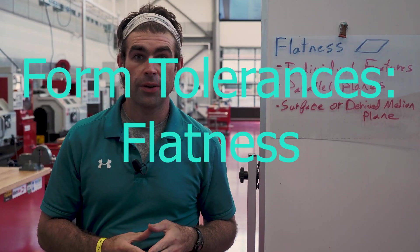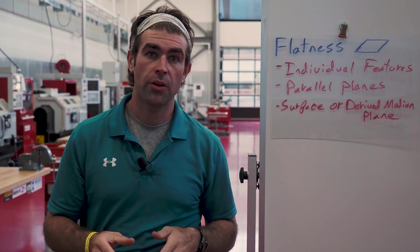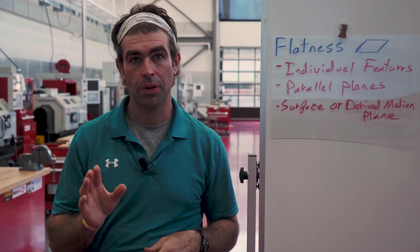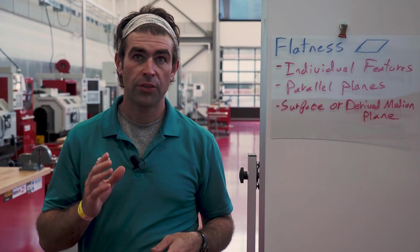Let's talk about tolerances of flatness. This is another form tolerance that applies to individual features. A flatness tolerance specifies a tolerance zone defined by two parallel planes within which the surface or derived median plane must lie. It's going to apply to both surfaces and width features of size.